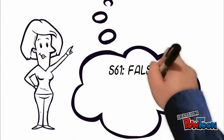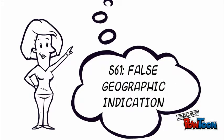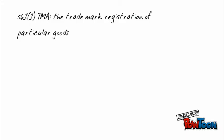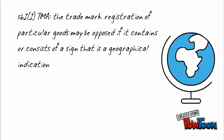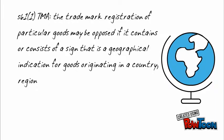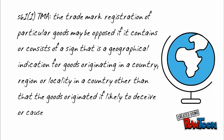The next ground we will explore is Section 61, where the trademark contains a false geographic indication. Under Section 61, subsection 1, a trademark registration in respect of particular goods may be opposed if the trademark contains or consists of a sign that is a geographical indication for goods originating in a country, region or locality in a country other than that where the goods originated, if likely to deceive or cause confusion.